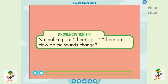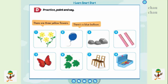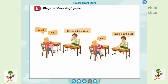Pronunciation Tip. Listen: There's a pink flower. There are two red balloons. Now listen again and say: There's a pink flower. There are two red balloons.